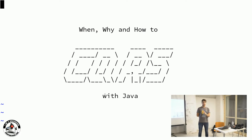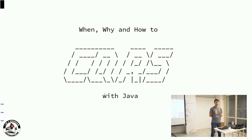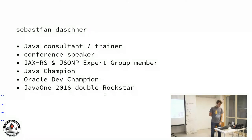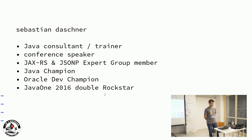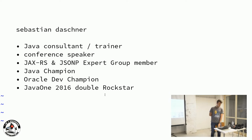Who has heard of the principle CQRS? And who has actually applied it or tested it out? This talk is going to be a lot about the motivations and principles behind it, and also when and how to apply it. My name is Sebastian Deschner, I'm a Java consultant and trainer, self-employed. I do a lot of conferences and conference talks. I help specify the future of Java EE and the JCP in two expert groups, and I'm also a Java Champion.